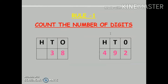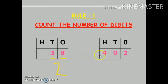The first rule whenever we have to compare any two numbers is that we have to count the number of digits. We are given two numbers: 38 and 492. First, we count the digits — 38 has two digits, and 492 has three digits: 4, 9, and 2.